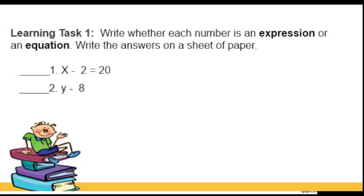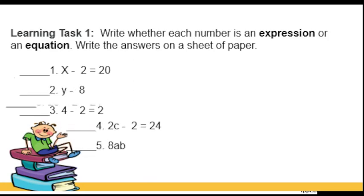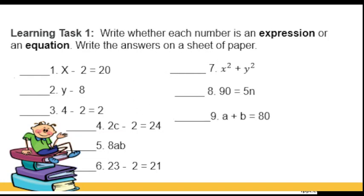So x minus 2 equals 20, y minus 8, 4 minus 2 equals 2, 2c minus 2 equals 24, 8ab, 23 minus 2 equals 21, x squared, x squared plus y squared, 90 equals 5n, a plus b equals 80, and 100 equals 4b.